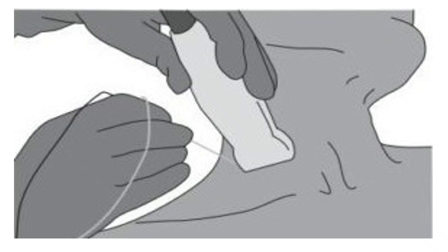The nerve structure may run parallel to the skin in part of its course, or it may run from superficial to deep. The most common situation is for the nerve to run from deep to superficial, meaning the ultrasound probe needs to be tilted proximally to direct the beam more distally. For example, when doing a supraclavicular or interscalene block in the neck, the probe is tilted cephalic, directing the beam caudally. The degree of tilting varies by location and patient position.